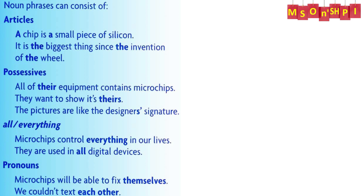Indefinite articles are A and An. The definite article is The. For example: A chip is a small piece of silicon. It is the biggest thing since the invention of the wheel. The bold words are articles.